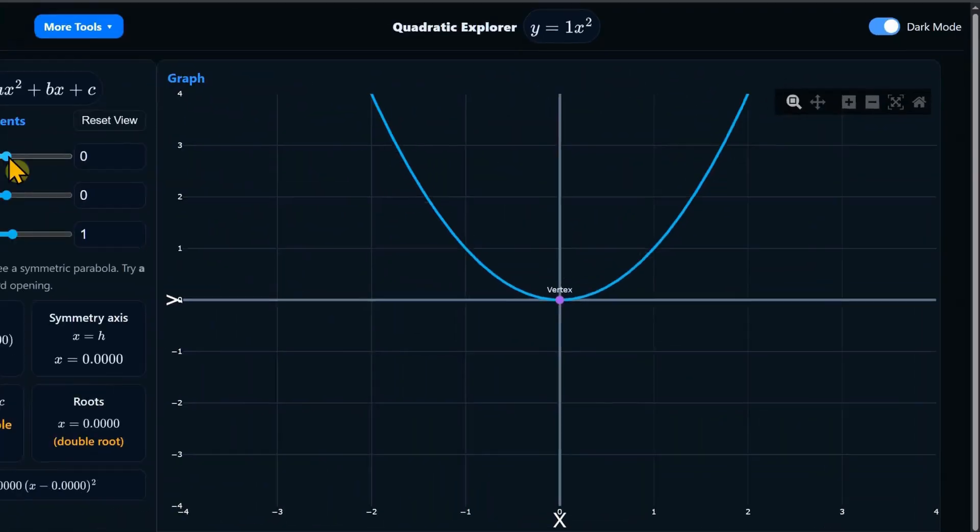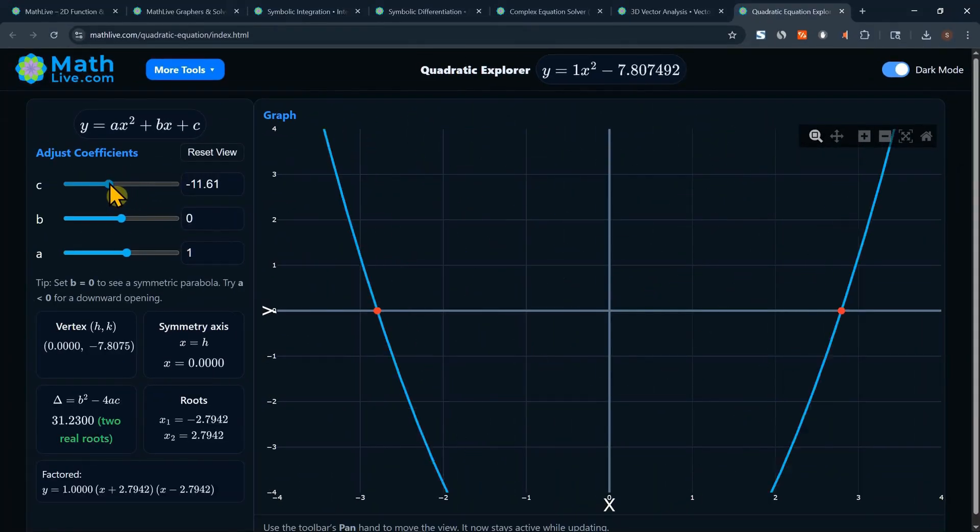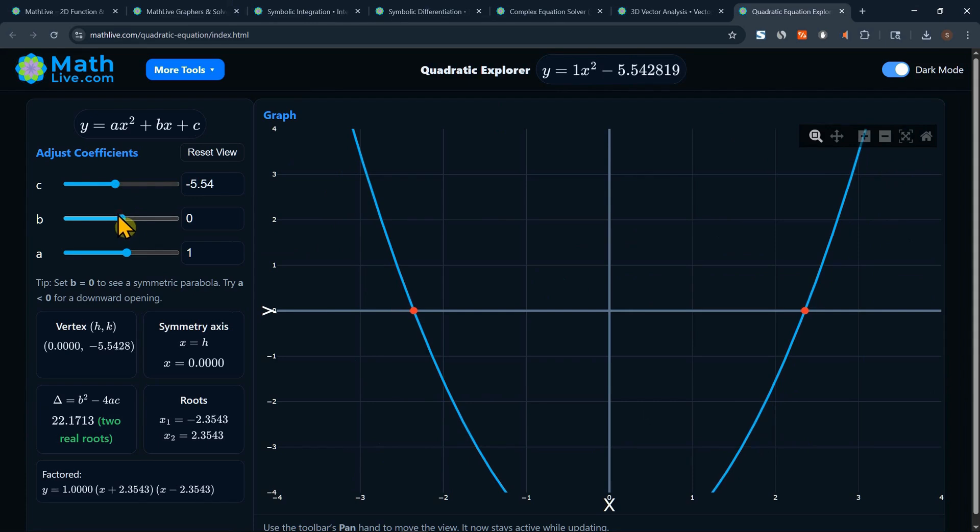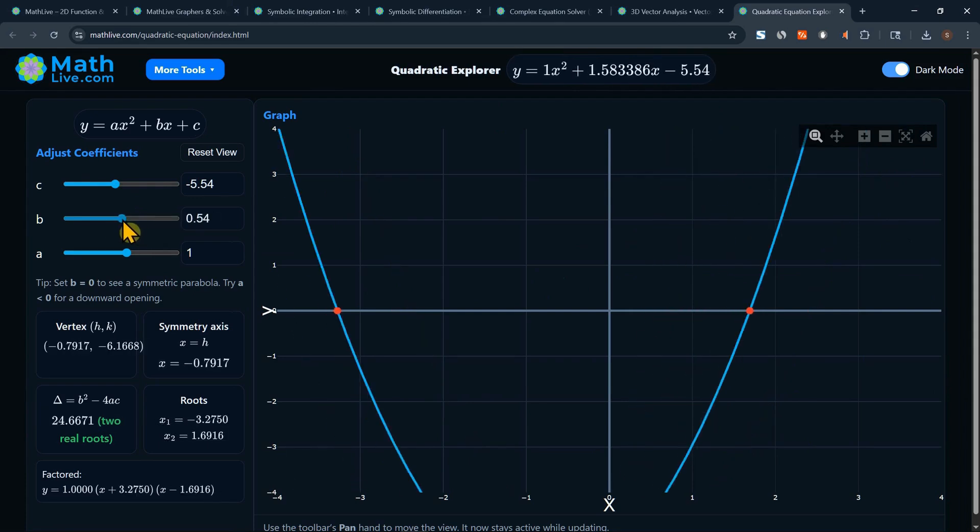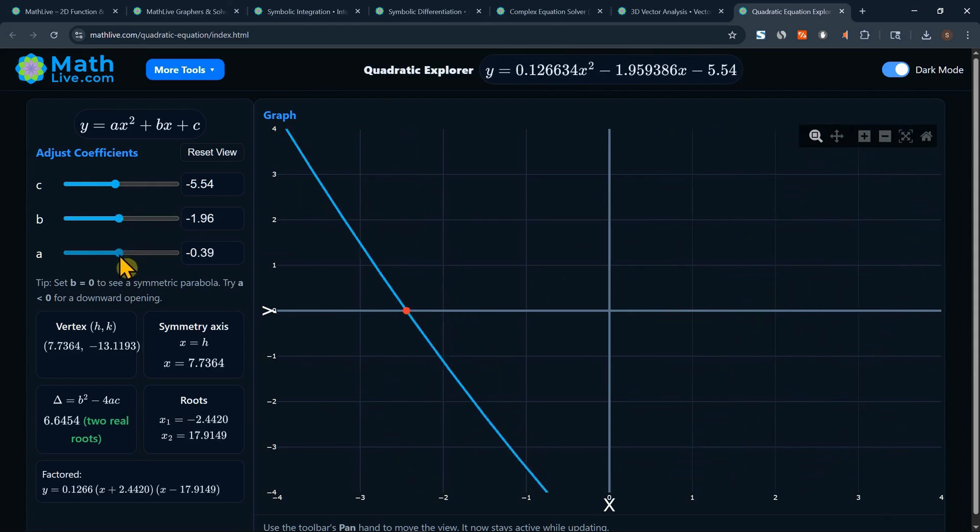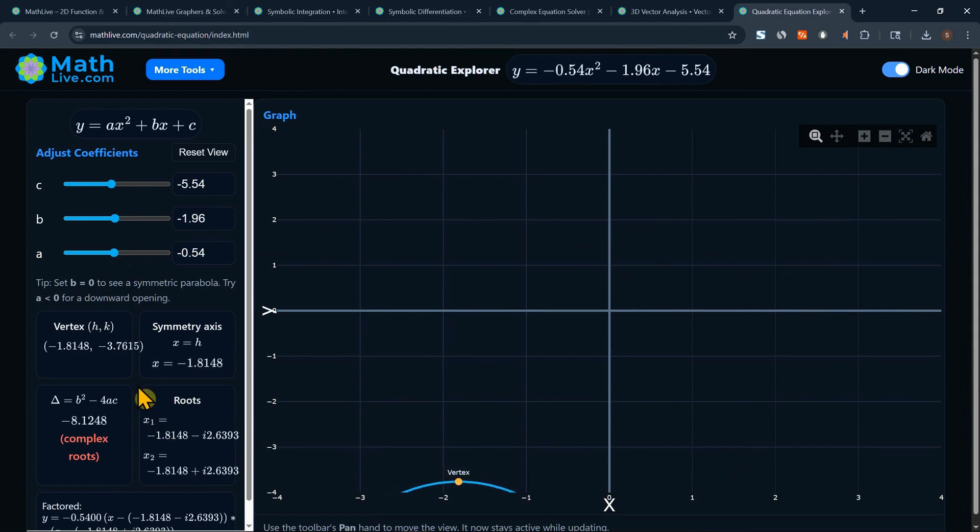The quadratic equation where you could change the C. Where you could change the B. You change the A. And you could see the solution. So this is an amazing teacher's aid.